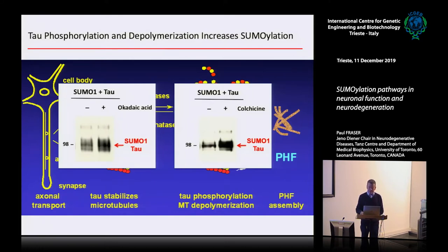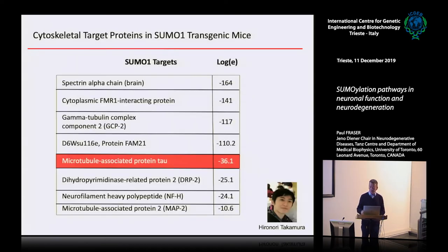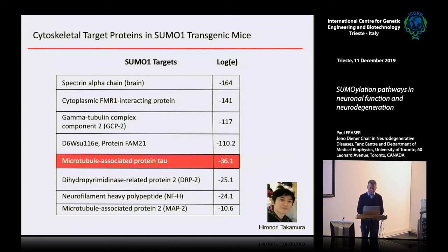These were all done in vitro, but we also found in our SUMO1 transgenes that tau was being modified in vivo to a large extent. The project was taken over by a postdoc from Japan, Hirinori Takemura. Hiro started looking at different tauopathies — is there really a connection between SUMO1 and disease?